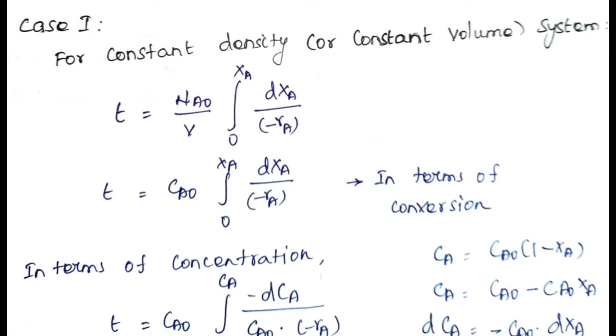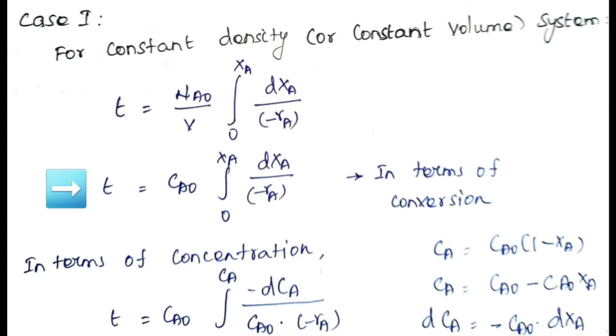Here, NA0/V equals CA0, the initial concentration of the reactant. So the performance equation becomes: t = CA0 · ∫₀^XA dXA / (−rA). This is the performance equation for a constant volume system in terms of conversion.